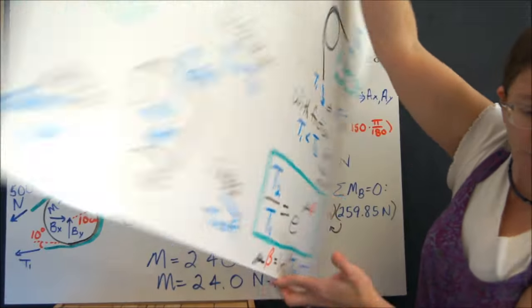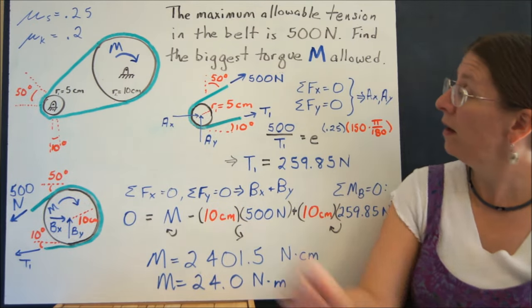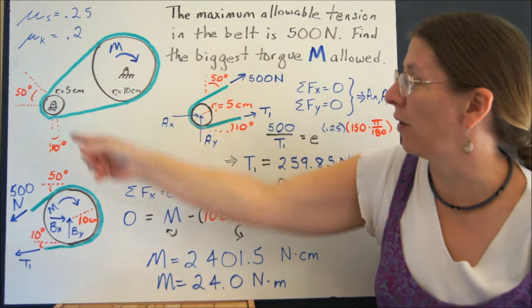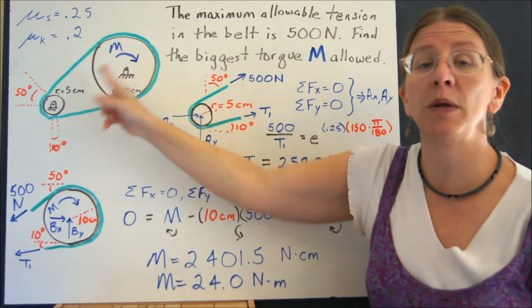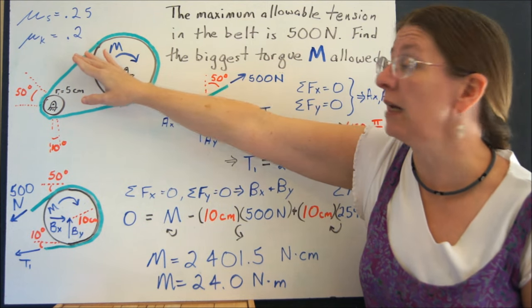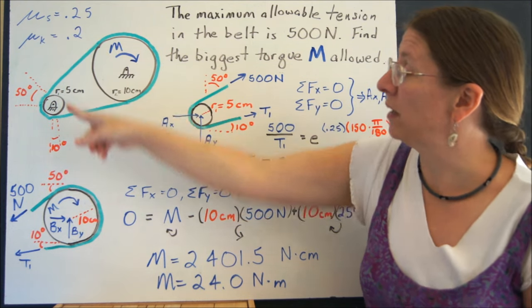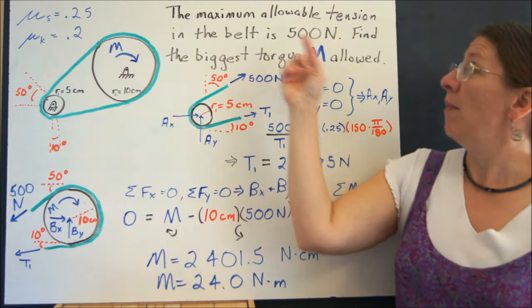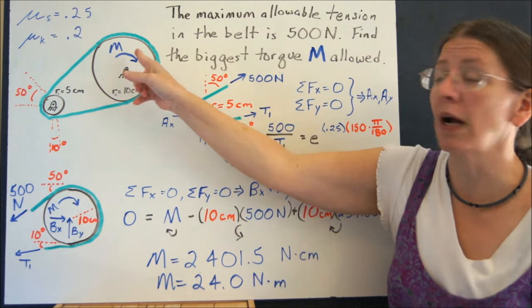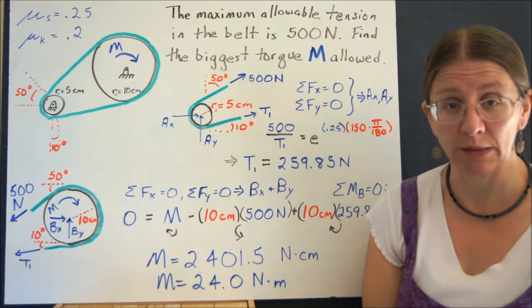Now if we look at a quick example of one of those, this is two belts - one belt, two pulleys - and this is going all the way around. I have a 5 centimeter pulley and a 10 centimeter pulley. I have the coefficient of static and kinetic friction, and this belt goes around. The maximum allowable tension on that belt is 500 newtons. I want to know what kind of torque I can put here before I break the belt.